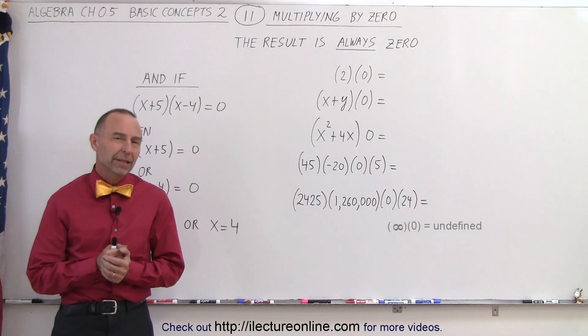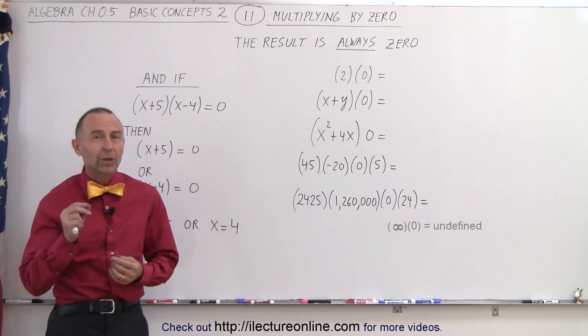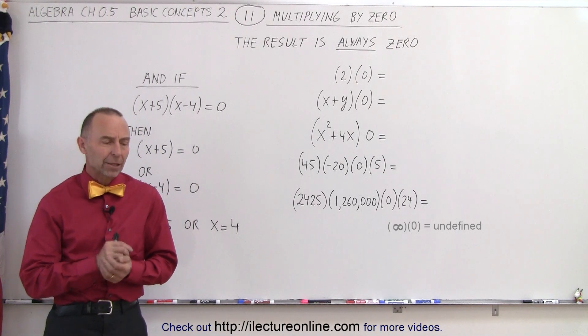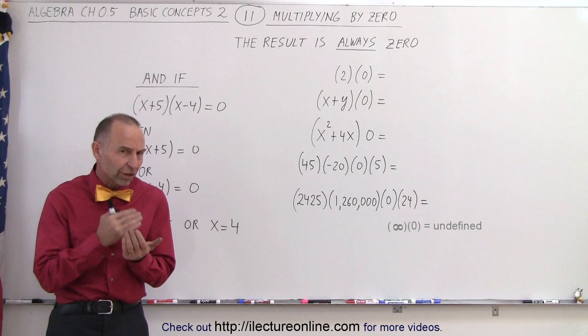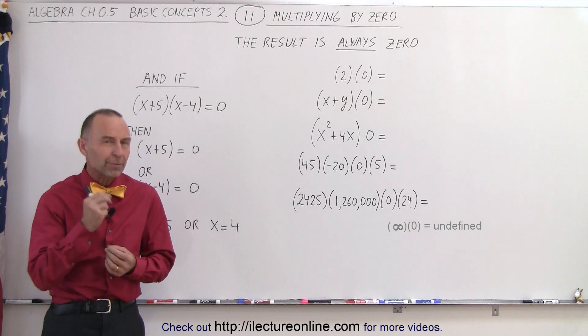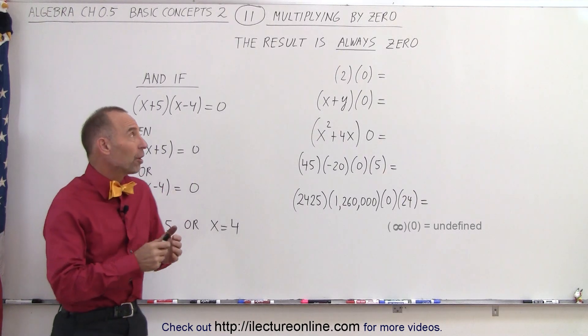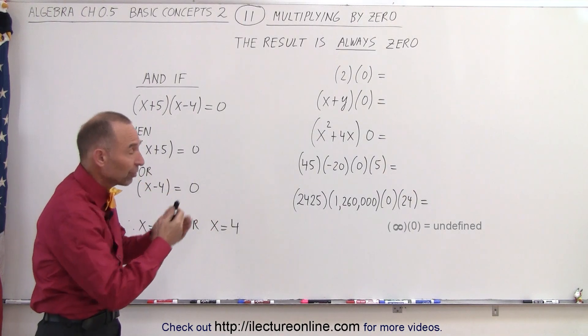Welcome to our lecture online. Now let's take a closer look at what happens when we multiply and one of the numbers is zero. There are certain situations in algebra where the concept of multiplying by zero is actually a very important concept. I'm going to show a simple example of that. So first of all, what happens when we multiply numbers and one of them is zero?